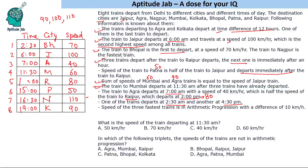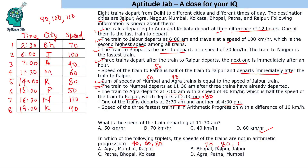Now let us answer the questions. What is the speed of the train departing at 11:30 AM? That is the Mumbai train, which departs at 60 kilometers per hour. Next question: which triplet of cities does not have speeds in arithmetic progression? Agra-Mumbai-Raipur is 40, 60, 80 — that is in AP. Bhopal-Raipur-Jaipur is 70, 80, 100 — that is not in AP.